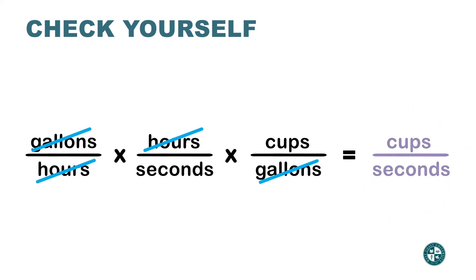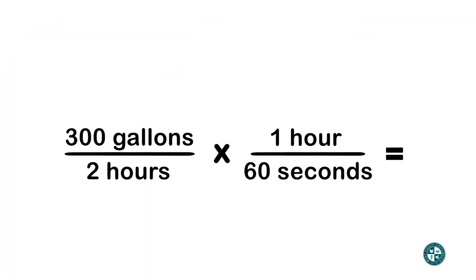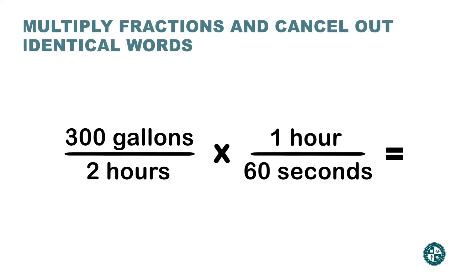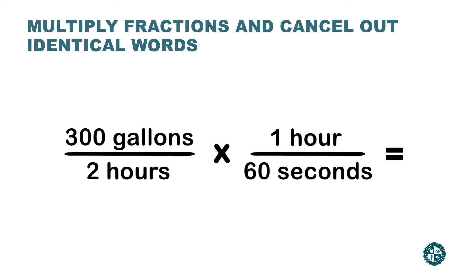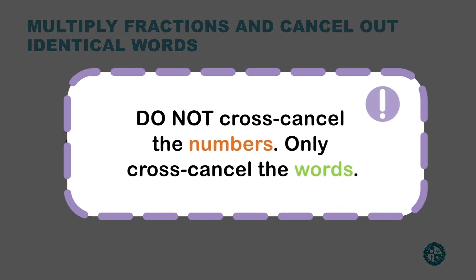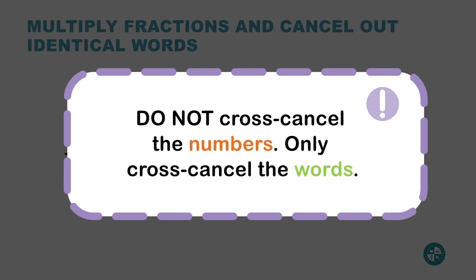And if you understood this idea, you're going to see that dimensional analysis is a simple technique of multiplying fractions. What I'm going to do next is mix numbers with words. I started with only fractions with numbers, then went over fractions with words, now I'm going to mix them. Tip: do not cross cancel the numbers — only cross cancel the words.